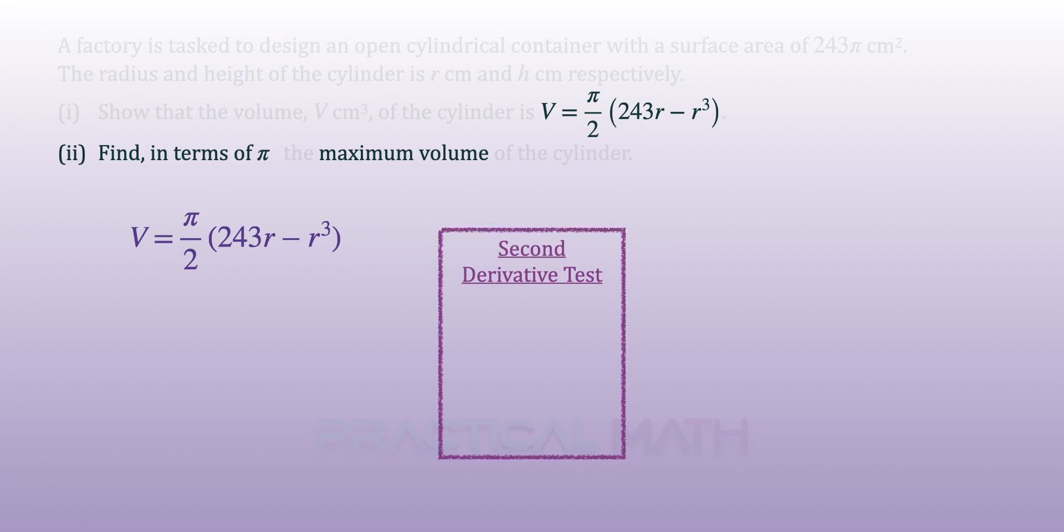To find the maximum volume, we need to apply the second derivative test. The first step to the second derivative test is equating the first derivative to 0, because the gradient of any stationary point is 0. We will now set the first derivative of the V equation, dV/dr, to be equal to 0.